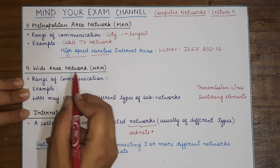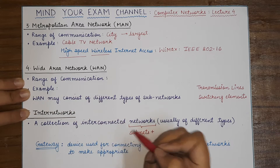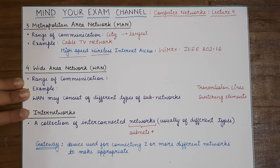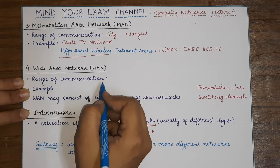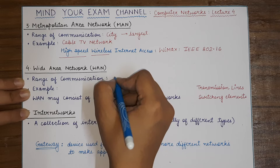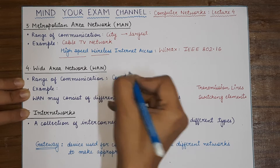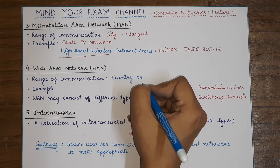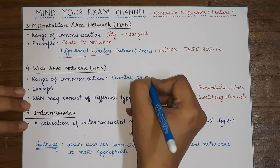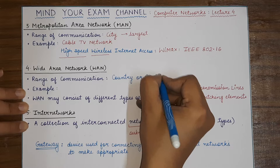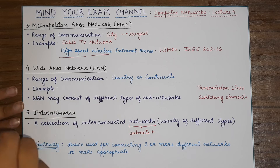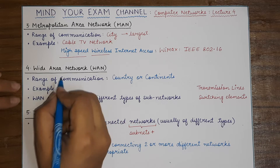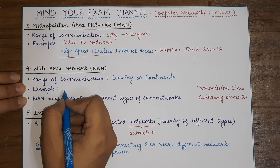Next we come to Wide Area Network. As we progress further, the networks we are considering are becoming larger in physical size. The range of communication for a WAN or Wide Area Network is a country or a continent. A network that is spread across different countries or different continents is known as a Wide Area Network.